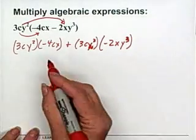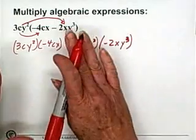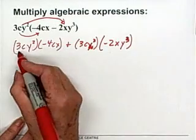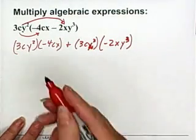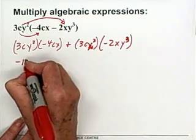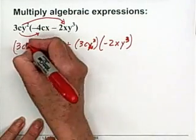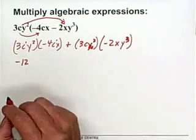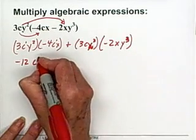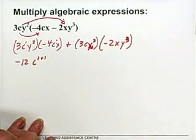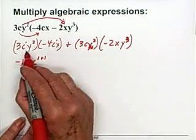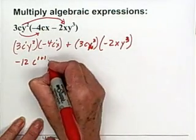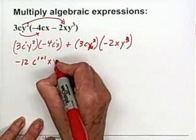So here we have in this first group, and remembering BEDMAS multiplication happens before addition. So we take the 3 and multiply it by -4. That gives us a -12. Now here we have a c¹ and a c¹. We're going to multiply those together so we end up with c^(1+1). And then we have an x and a y². We're going to put the x in front because it's alphabetically in front of the y. So we have x and then a y².